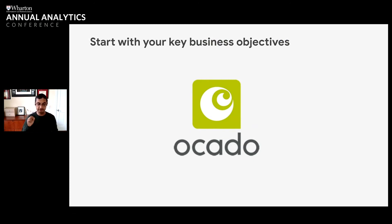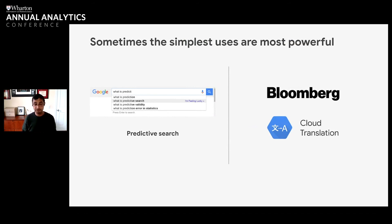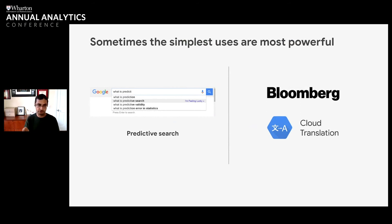The second thing is that sometimes the simplest uses are the most powerful. Rather than thinking about broad uses, there are simple things you can do that make AI very useful very quickly. For example, Google Suggest — when you type things into a Google search, it starts to autofill. That was actually an experiment an engineer did about 15 years ago in just a few hours, and it got iterated over and over again — a simple use case that added a ton of value to users. We're also seeing things like translation be a great entry point: Bloomberg is using translation to translate documents from across the world to give investors a better view of the news.